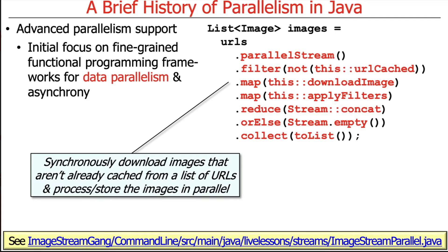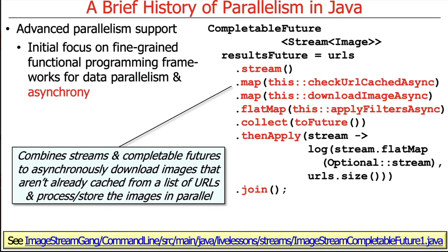A simple example shows how parallel streams can be used to synchronously download images not already cached from a list, apply filters to transform the images, and store them all in parallel. There's also a variant combining streams and completable futures to asynchronously download, process, and store images in parallel. You'll get a chance to experiment with both approaches — parallel streams and completable futures — for the same type of problem.